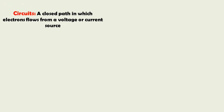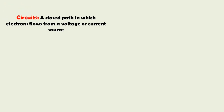An electronic or electric circuit is nothing but a closed path in which electrons flow from a voltage or current source. From this source we get the flow of electrons, and they must be in a closed path — such a configuration is called a circuit.